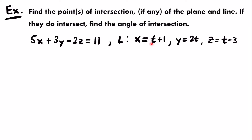We plug t plus 1 in for x, 2t in for y, and t minus 3 in for z in the plane equation. Then we solve for the parameter t, and use that value to plug back into our parametric equations to get the x, y, and z coordinates of the point of intersection.